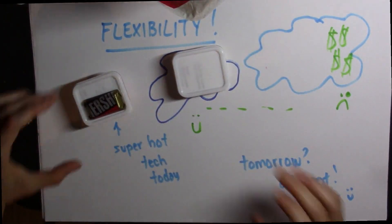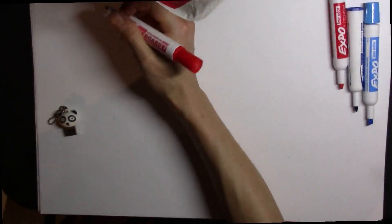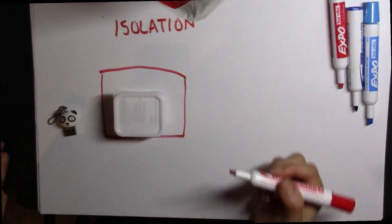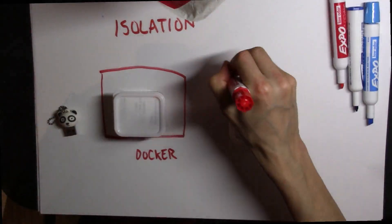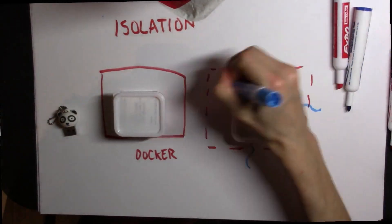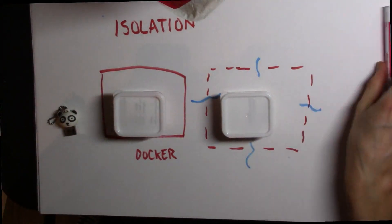The final problem that containers solve really well is isolation. This level can actually vary quite a bit based on container technology. Some container technologies like Docker will give you more of a complete isolation of the environment. And then there are other container technologies like Singularity that are optimized for high performance computing where you actually want a more seamless environment from the host machine.